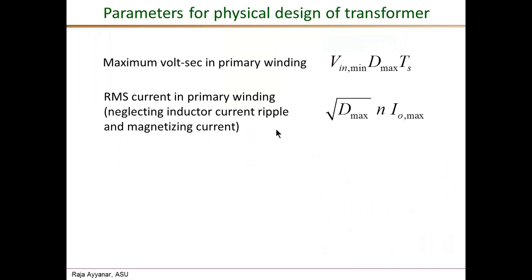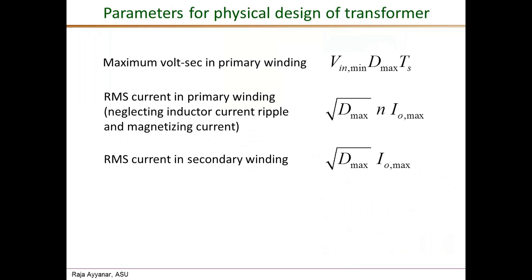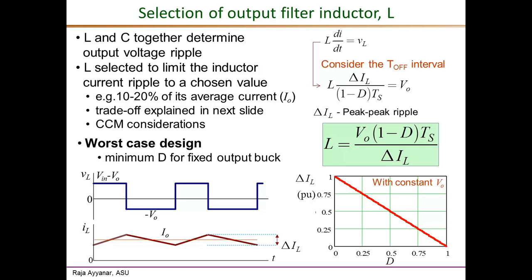We also need the RMS current values in all windings. The primary winding carries a current of n times I_o for a duration of D × T_s. Neglecting the small inductor current ripple and small magnetizing current, the RMS current is given by n × I_o × √D. The secondary winding carries the load current for the same duration D × T_s, so its maximum RMS current is √D_max times the maximum load current. The reset winding has a voltage rating comparable to the primary winding, but its current rating is almost negligible.